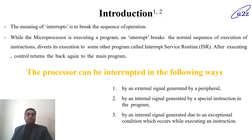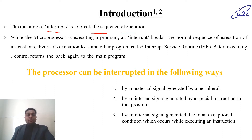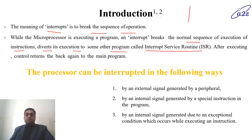Introduction. The meaning of interrupt is to break the sequence of operation — it is something which breaks the current execution sequence. While the microprocessor is executing a program, an interrupt breaks the normal sequence of execution of instructions and diverts execution to some other program called the interrupt service routine, in short called ISR. We can say that if a program is normally being executed and an interrupt is generated, it will cause the execution of some other subroutine, disturbing the normal execution. Such a scenario is known as an interrupt.